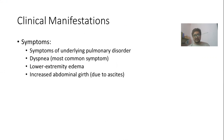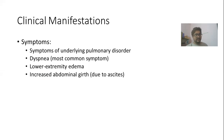Clinical manifestations differ according to the underlying cause for cor pulmonale. The most common symptom is dyspnea, and there will be symptoms of the underlying pulmonary disorders. Patients can present with lower extremity edema as well as increased abdominal girth due to ascites, because of right heart failure.